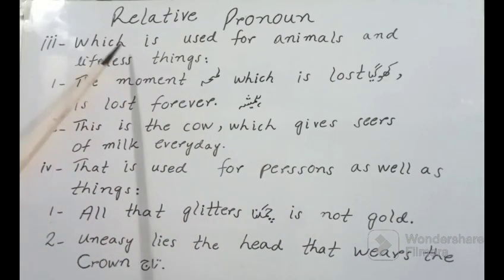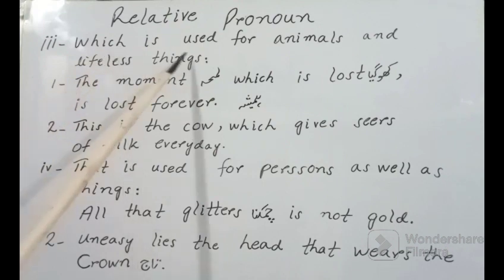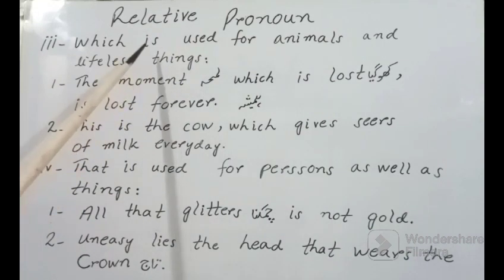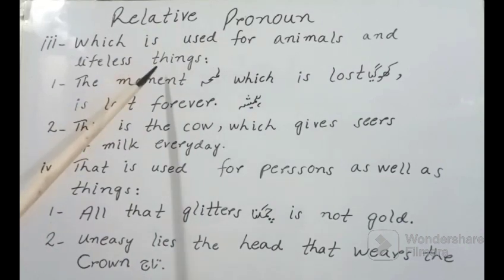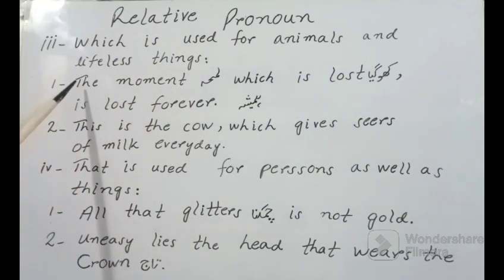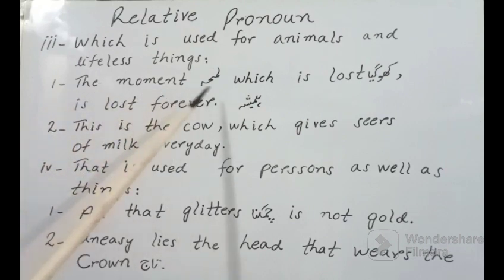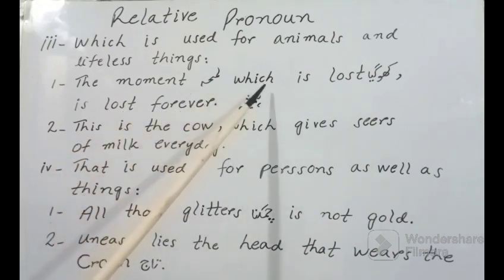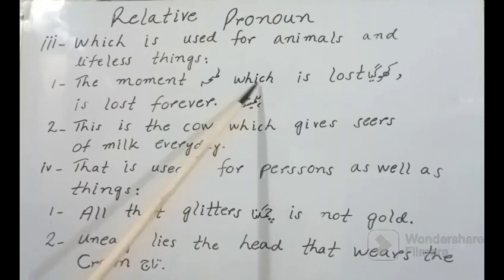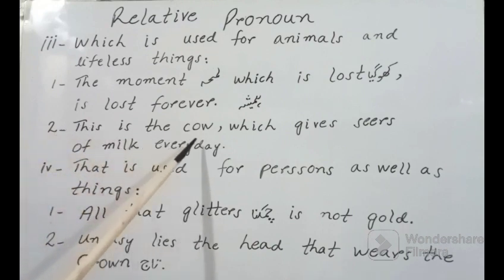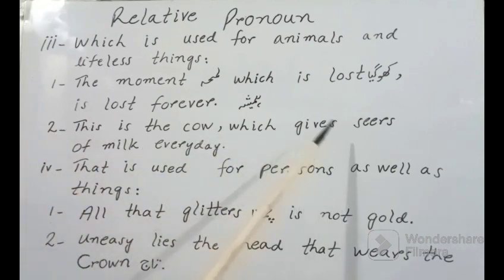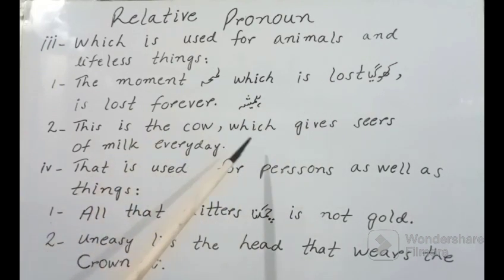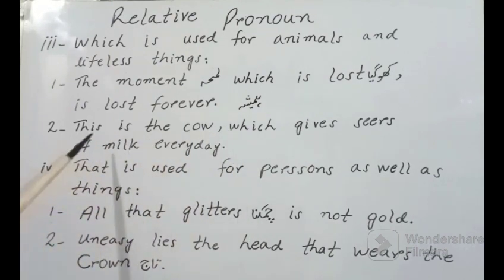'Which' کا مطلب ہوتا ہے 'جو'. Which is used for animals and lifeless things. Example one: 'The moment which is lost is lost forever' — جو لمحہ کھو گیا وہ ہمیشہ کے لیے کھو گیا. Example two: 'This is the cow which gives sears of milk everyday' — یہ گائے ہے جو روزانہ بہت زیادہ دودھ دیتی ہے. یہاں animals کے لیے بھی 'which' use کیا گیا.